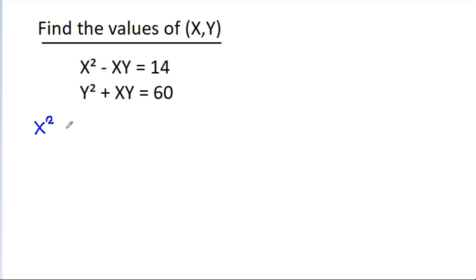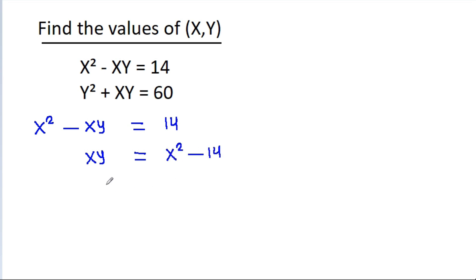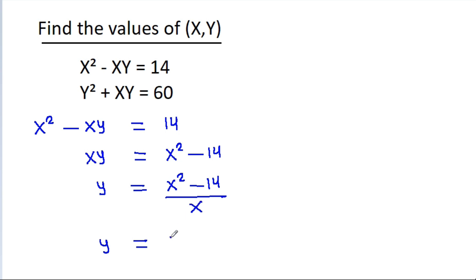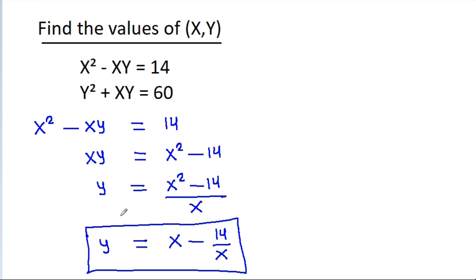We have x squared minus xy is equal to 14, so xy is equal to x squared minus 14, and y will be equal to x squared minus 14 divided by x. So y is equal to x minus 14 divided by x. Suppose this is equation 1 and the other is equation 2.